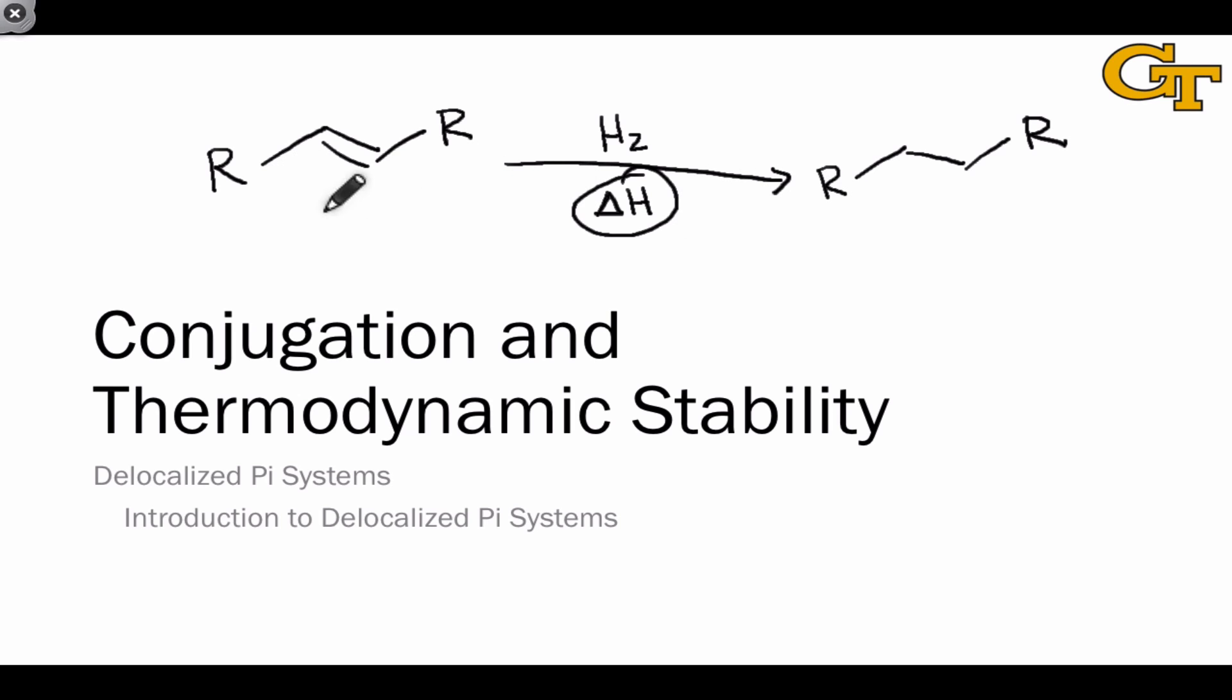The greater this is, the less stable is the starting alkene, as long as we set up a situation where the two alkenes are leading to the same product, the same final alkane product.